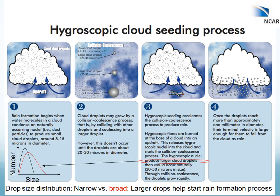The basis for our statistical analysis is the hygroscopic cloud seeding conceptual model. Rain formation begins when water molecules condense on naturally occurring nuclei and produce a distribution of small cloud droplets. In a more continental or polluted scenario, you end up with a narrower droplet spectra, while in a cleaner maritime environment you get a broader spectra. The collision coalescence process is then the next step, where larger droplets fall faster and collect smaller droplets, growing to precipitation-sized droplets — but this typically doesn't occur until you have at least 20 to 30 micron sized droplets. Hygroscopic seeding aims to accelerate this process by burning hygroscopic flares at cloud base, releasing hygroscopic nuclei to form larger droplets and initiate the warm rain process.